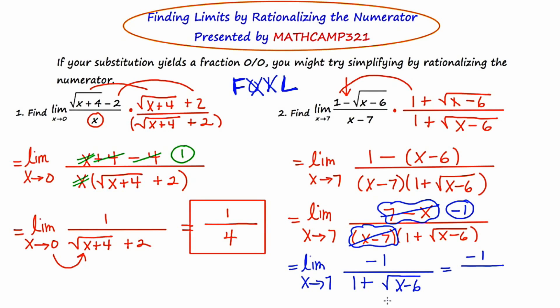Now, if we put the seven in here, seven minus six is one, the principal square root of one is one, and one plus one is two. So the answer to this limit question is negative one half.